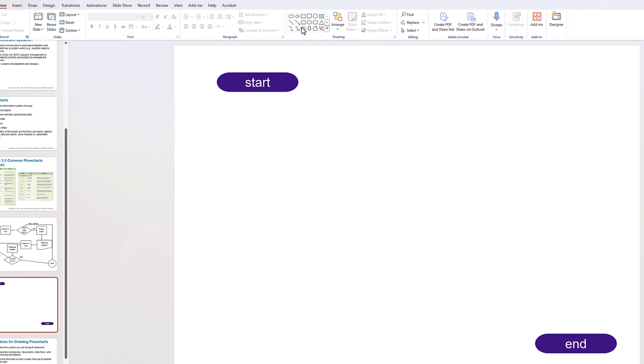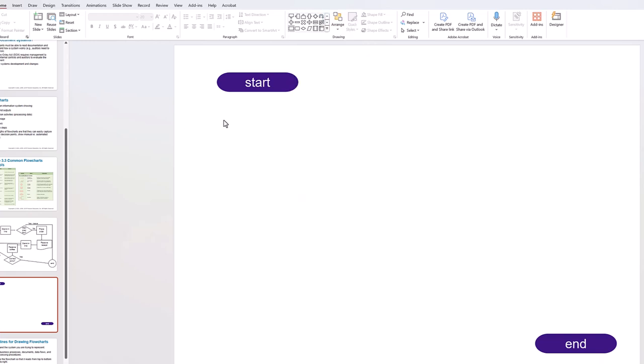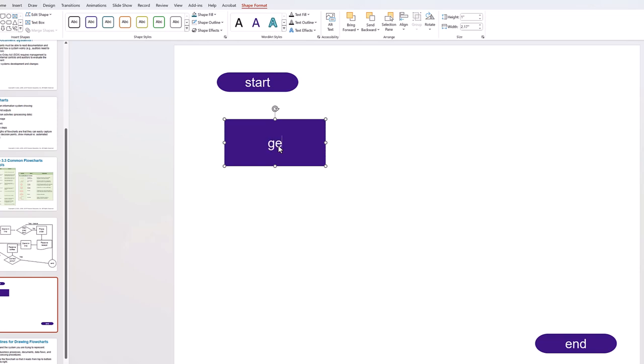And then I'm going to tag one with start. Another one with end. Again, just double clicking on them. Let's put a basic process in. So, I'm going to grab a basic rectangle. And again, you can just click on it and kind of see the processes here. But you see we have process, alternate process, decision, all kinds of stuff. So, I'll do a simple process. Maybe get paper.